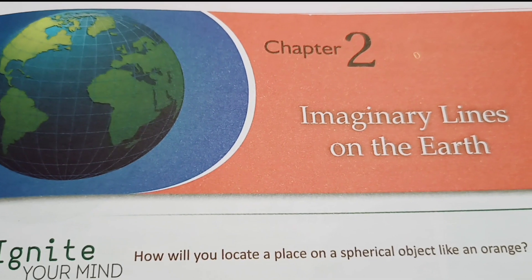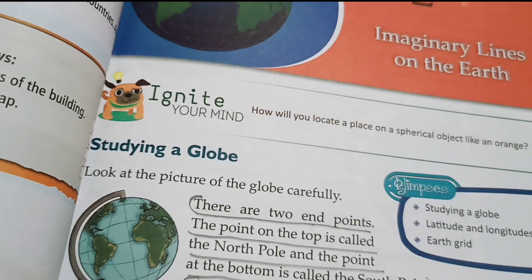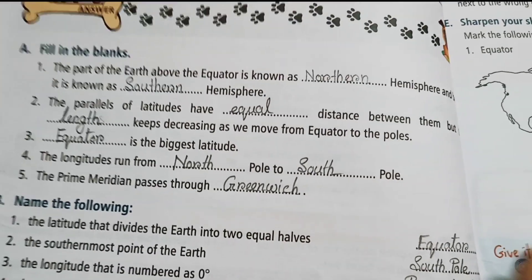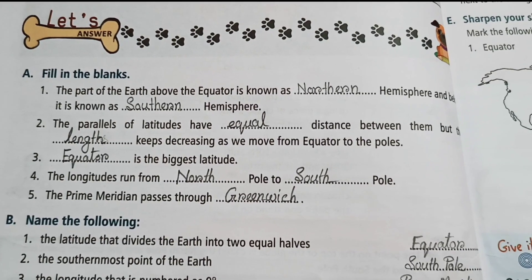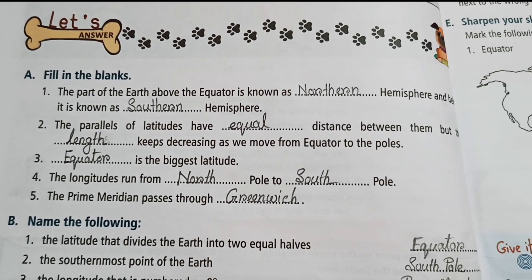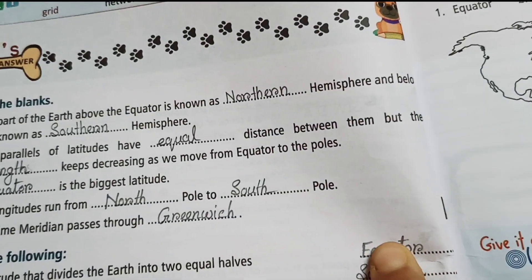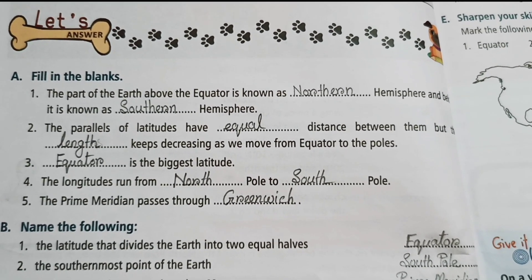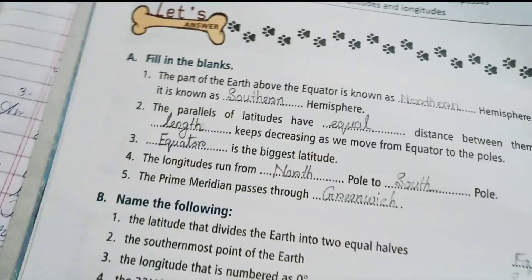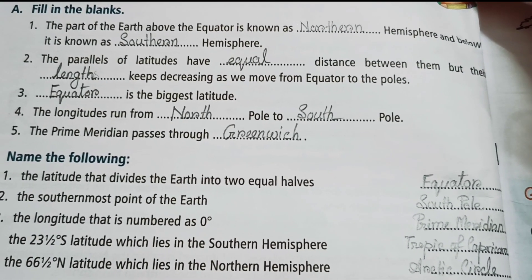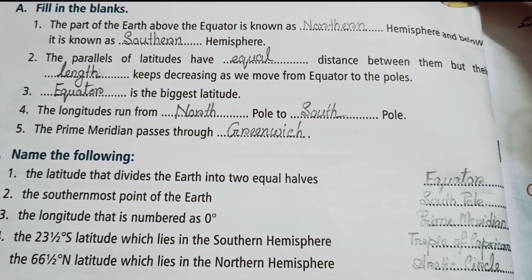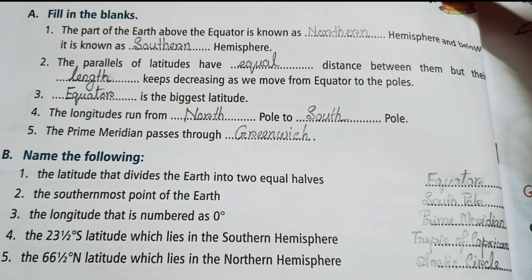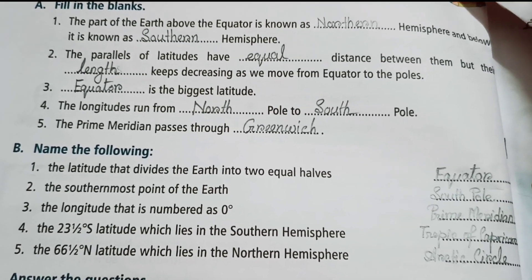Class 5 Geography, Chapter 2: Imaginary Lines on the Earth. Fill in the blanks: (1) The part of the Earth above the equator is known as the Northern Hemisphere and below it is known as the Southern Hemisphere. (2) The parallels of latitude have equal distance between them, but their length keeps decreasing as we move from the equator to the poles. (3) The equator is the biggest latitude. (4) The longitudes run from the North Pole to the South Pole. (5) The Prime Meridian passes through Greenwich.